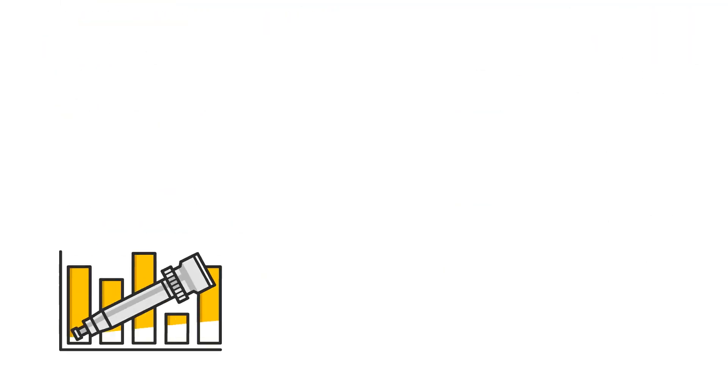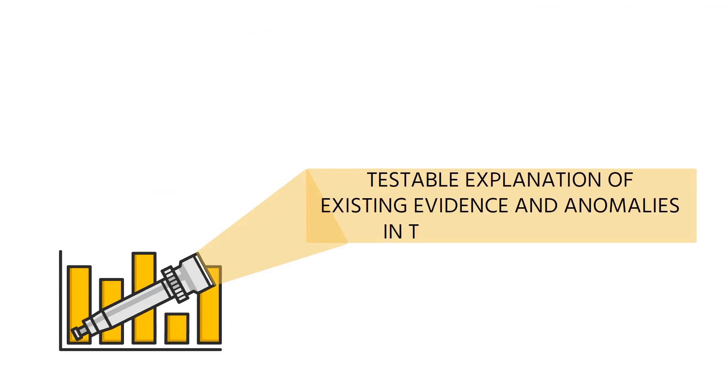We need a theory to predict the future. We need a testable explanation of existing evidence and anomalies in terms of causality, not only of how X implies Y, but also how the absence of X implies the absence of Y.